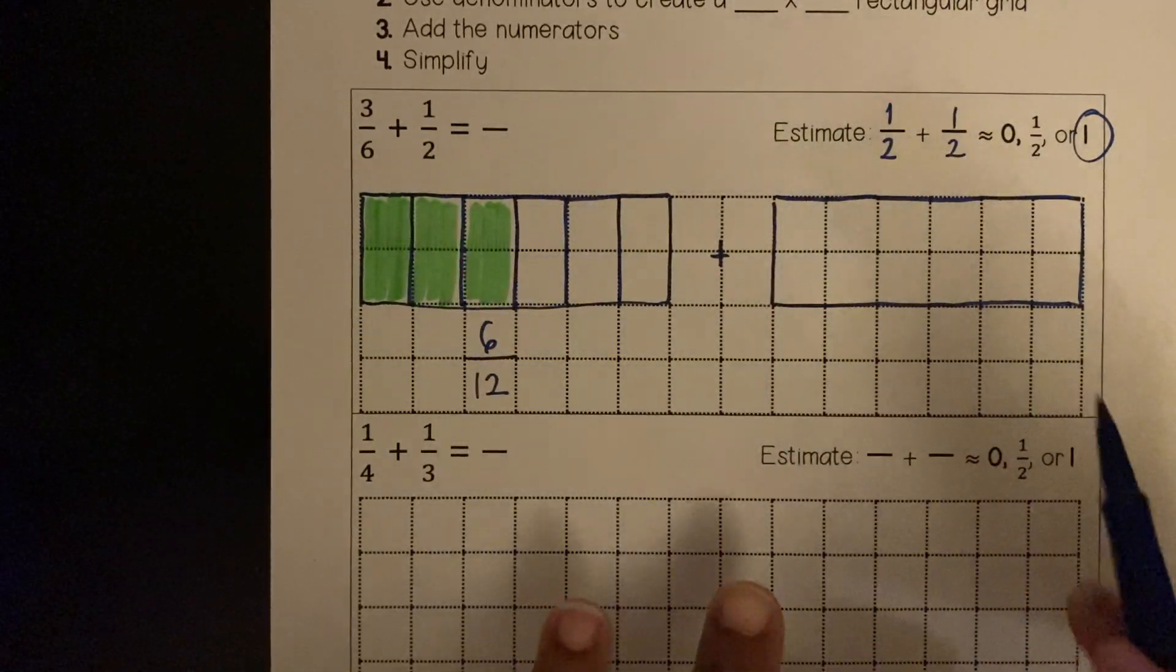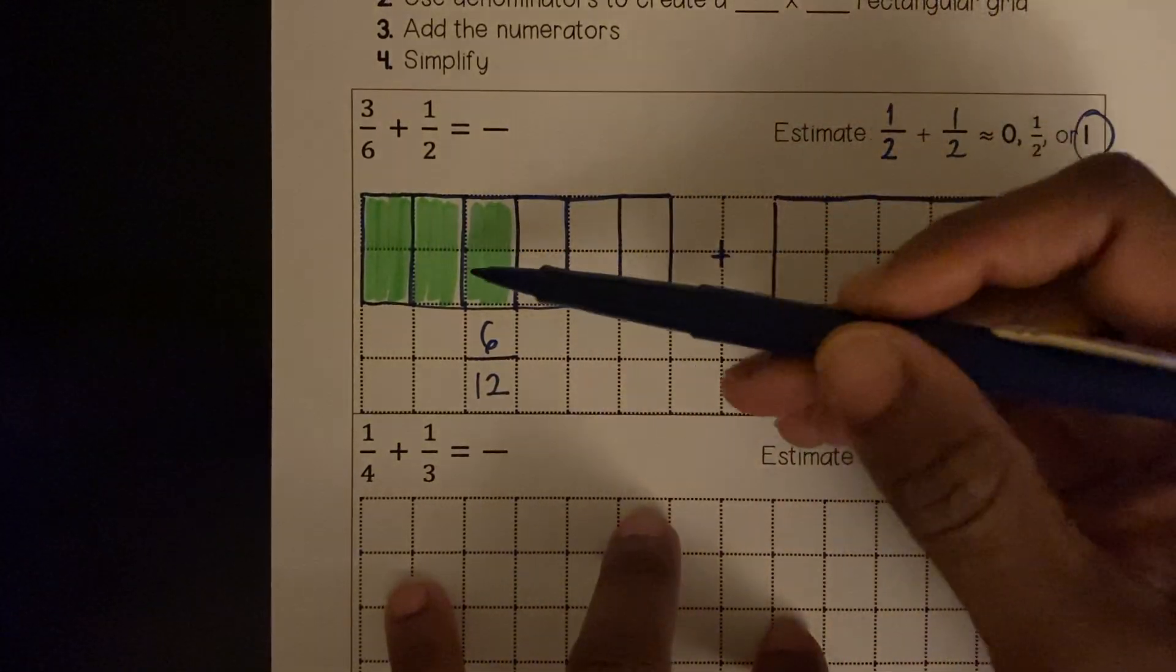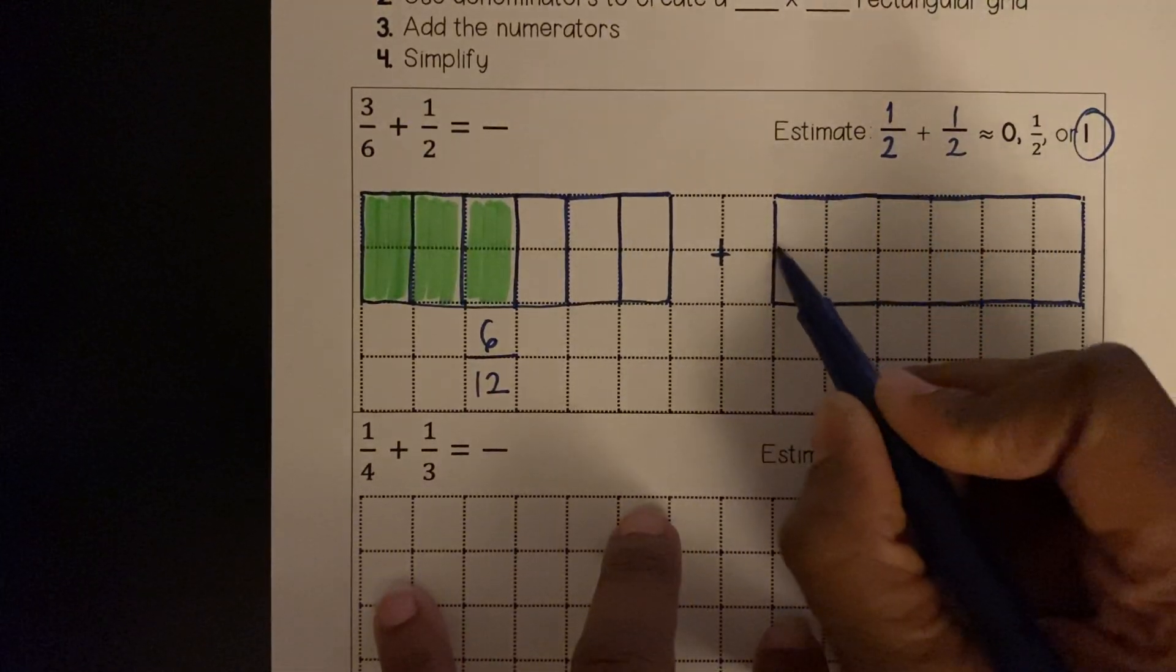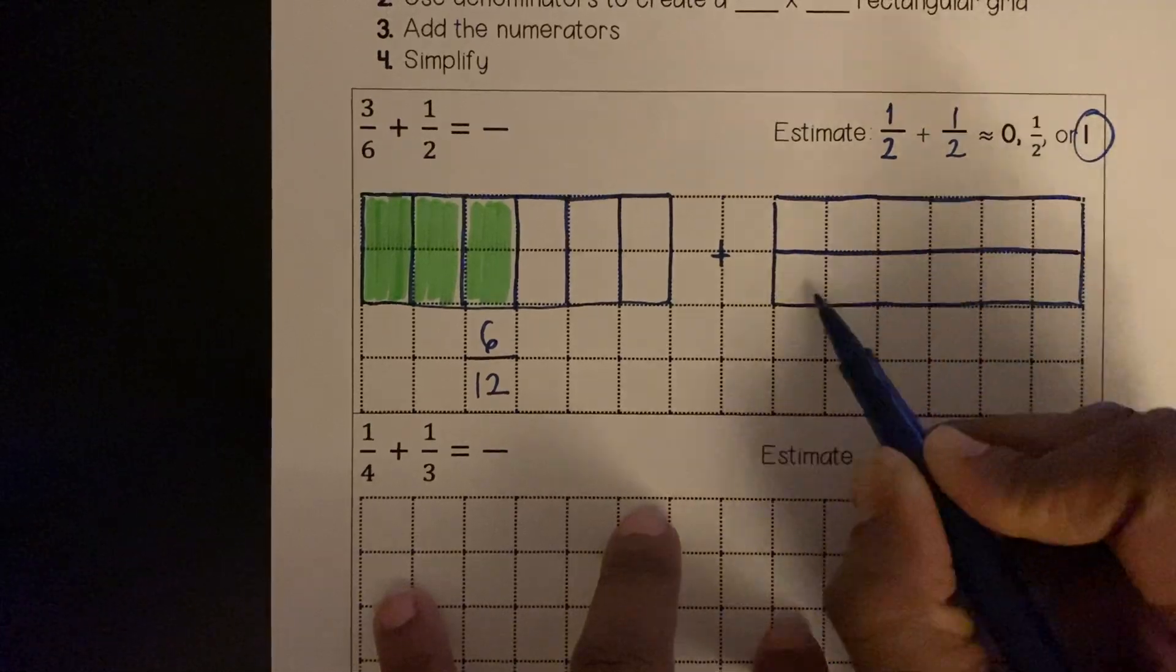This time I'm modeling the 1/2, so I need to find 2 of something. I know that if I go up and down those are sixths, so I need to go across. One, two. 1 half, 2 halves.